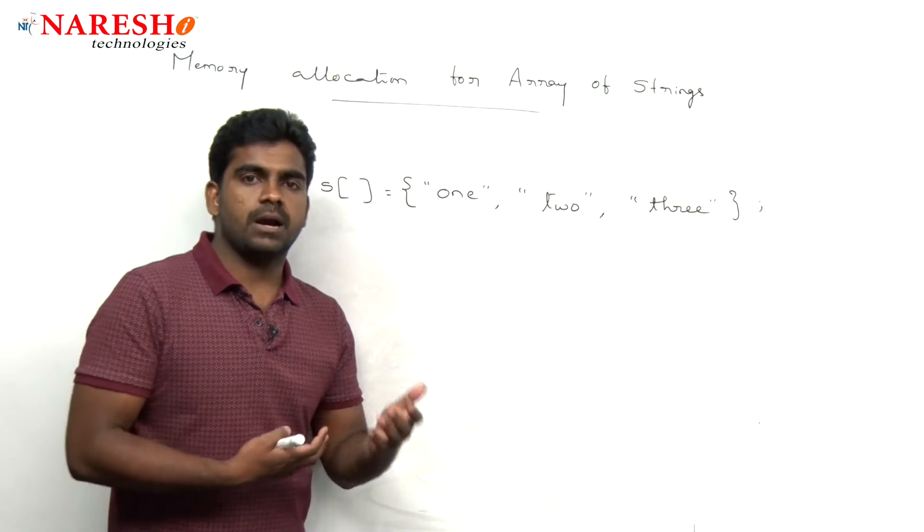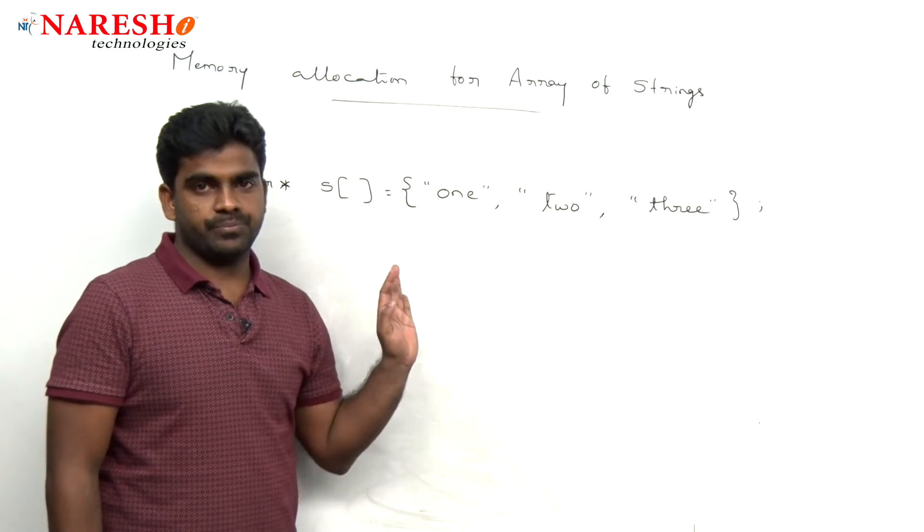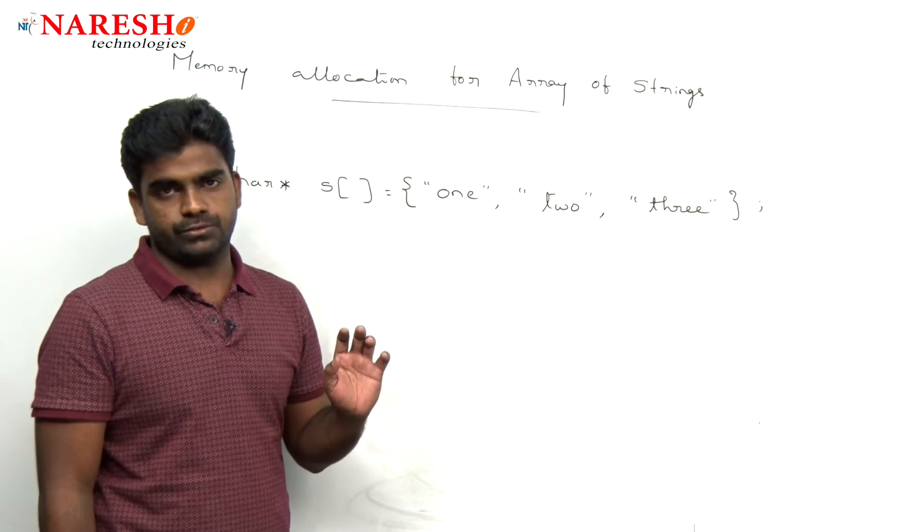Whenever we are processing the command line arguments and some other concepts, we use this one. That is why how memory will be allocated to these strings first of all.